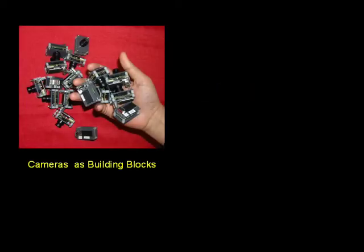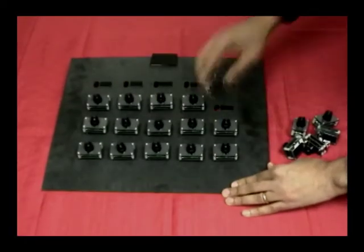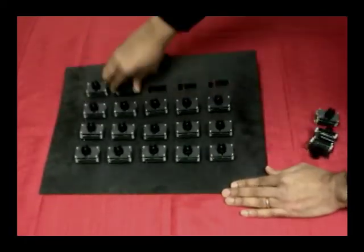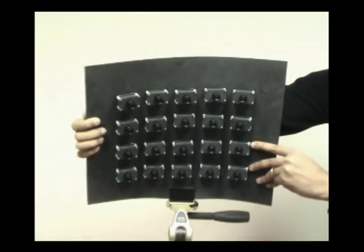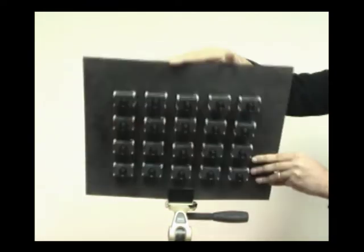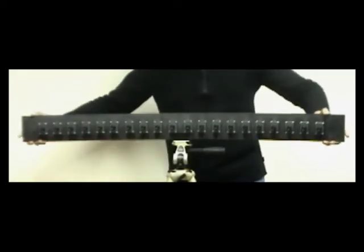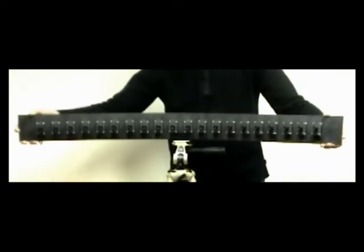To create dynamic collages of changing scenes, we have designed camera arrays that are flexible. A total of 20 video cameras are used as building blocks that can be quickly attached to a flexible sheet of plastic. An array with any desired configuration of the cameras can be put together in less than 5 minutes. Here we see a 2D array. A cinematographer can flex the array in various ways to control the composition of a scene as it changes. We can also create linear arrays with all 20 cameras. The array can be flexed to make it convex, concave, or even twisted.